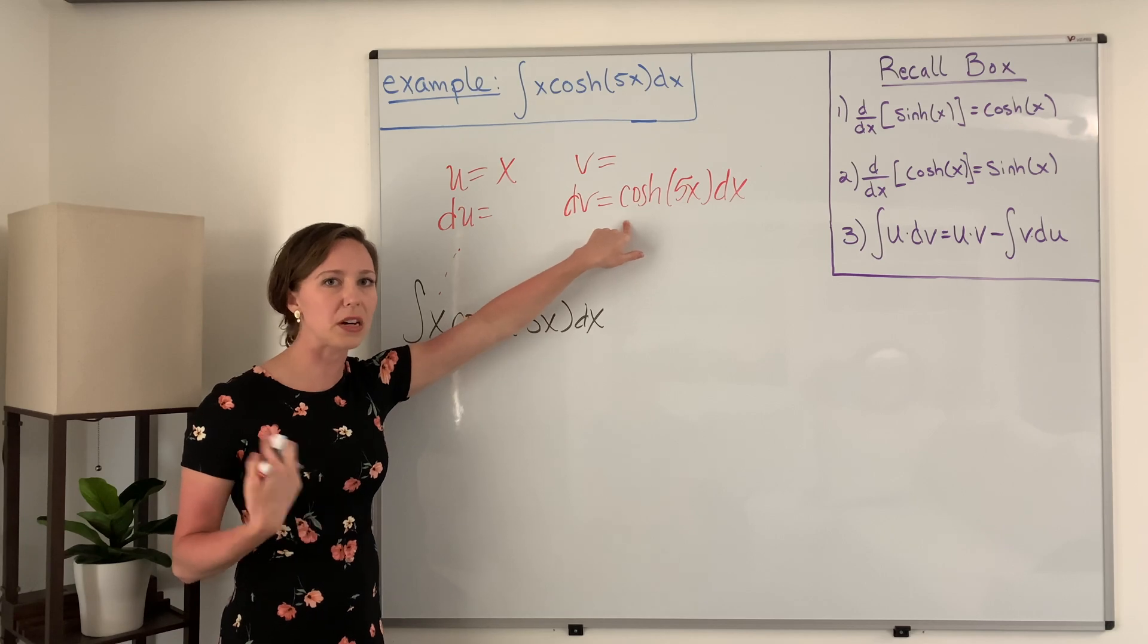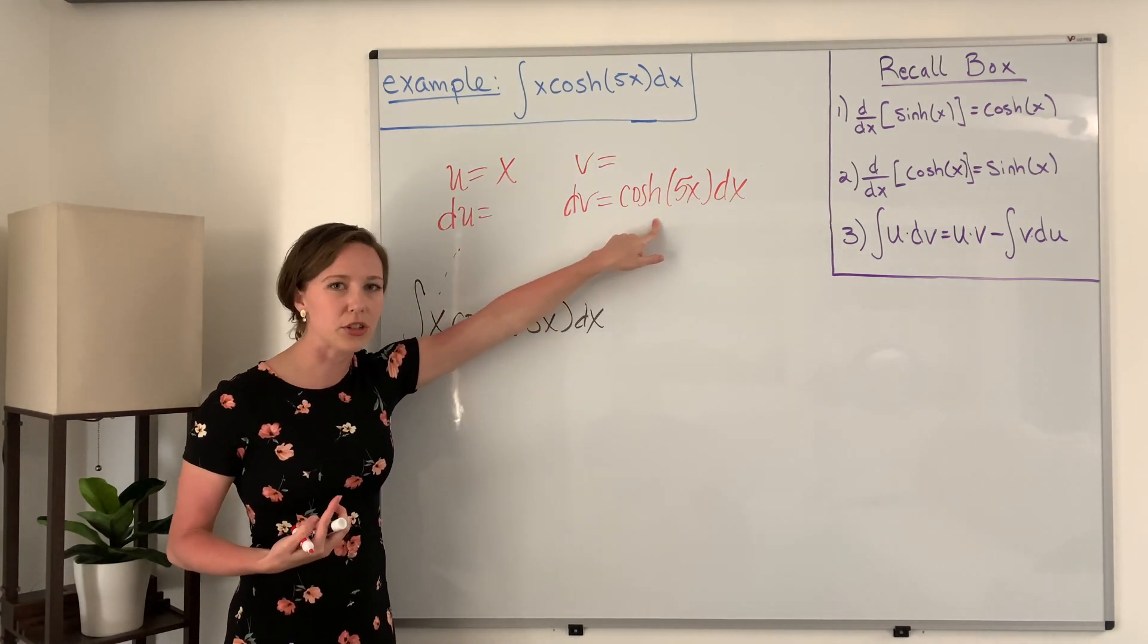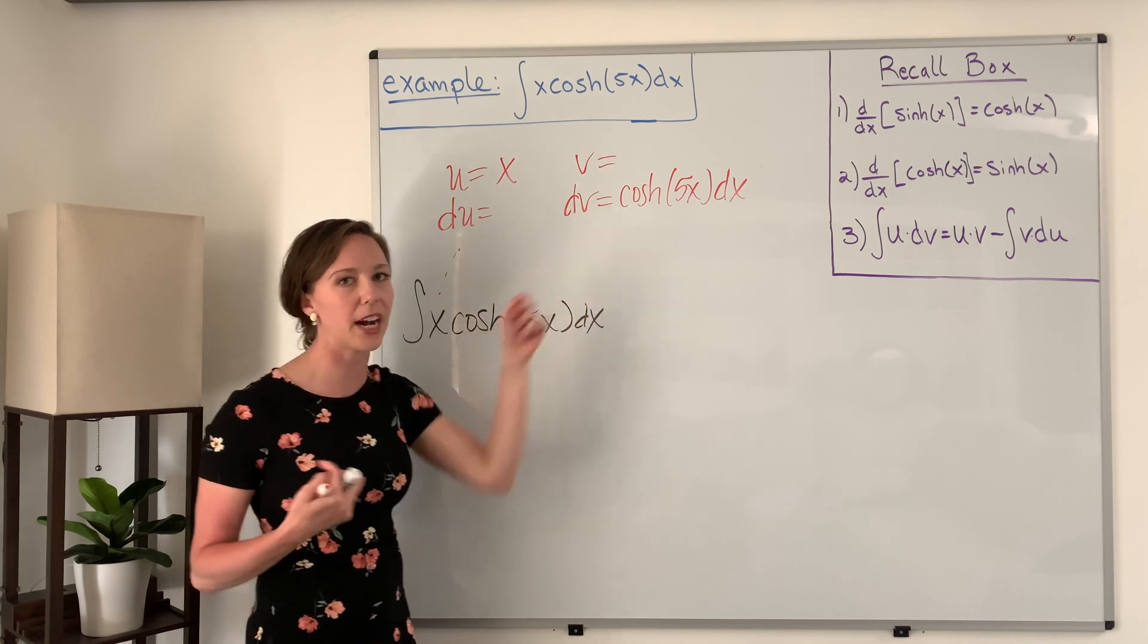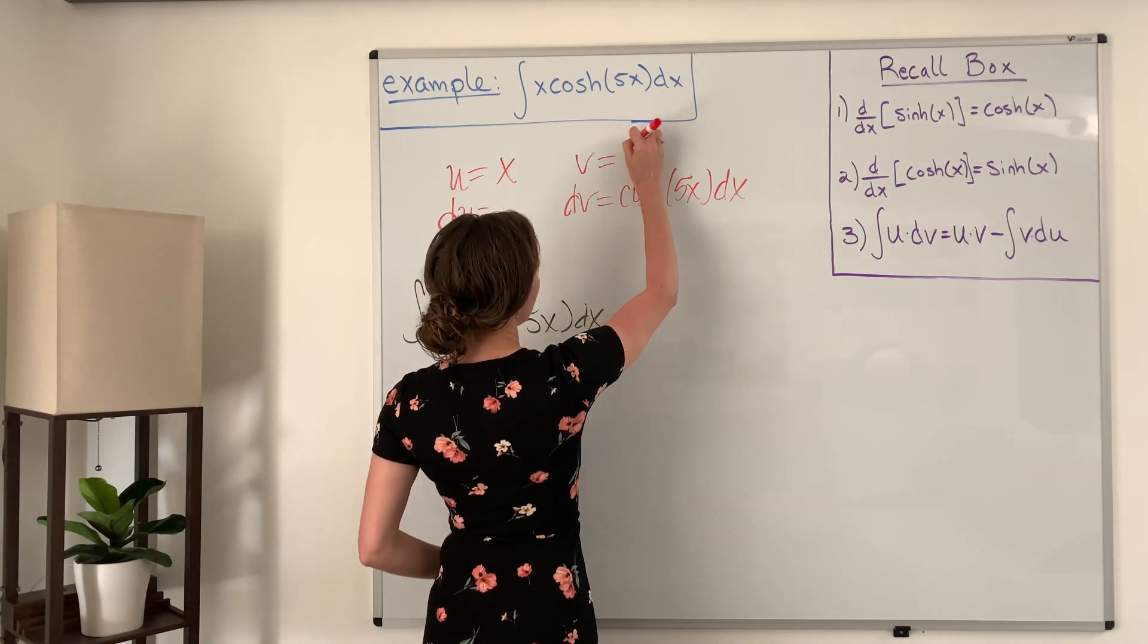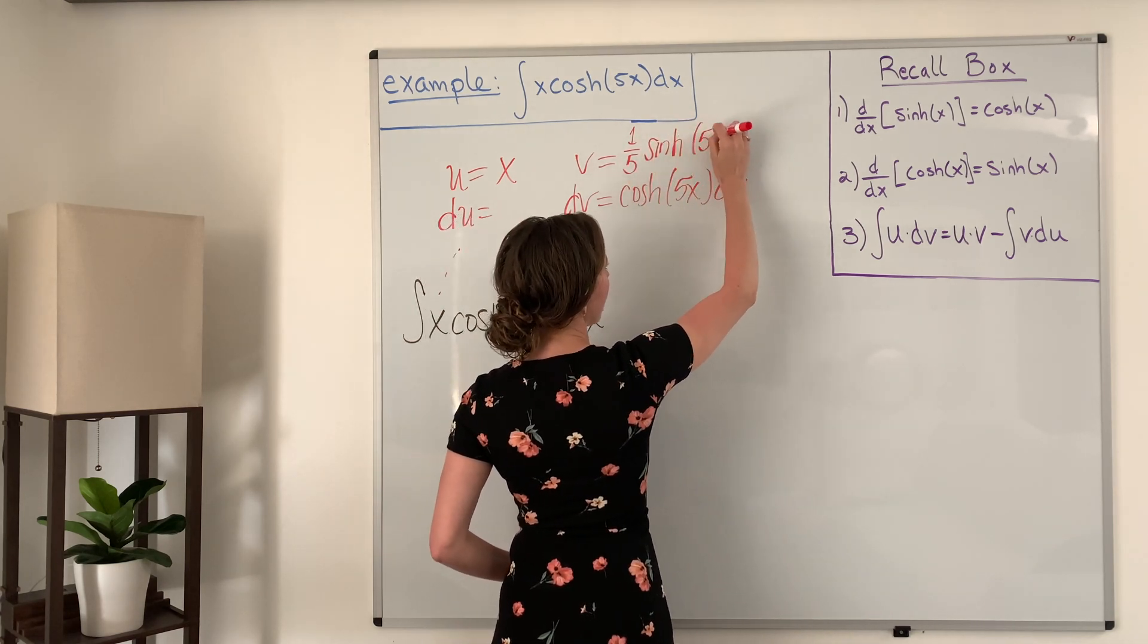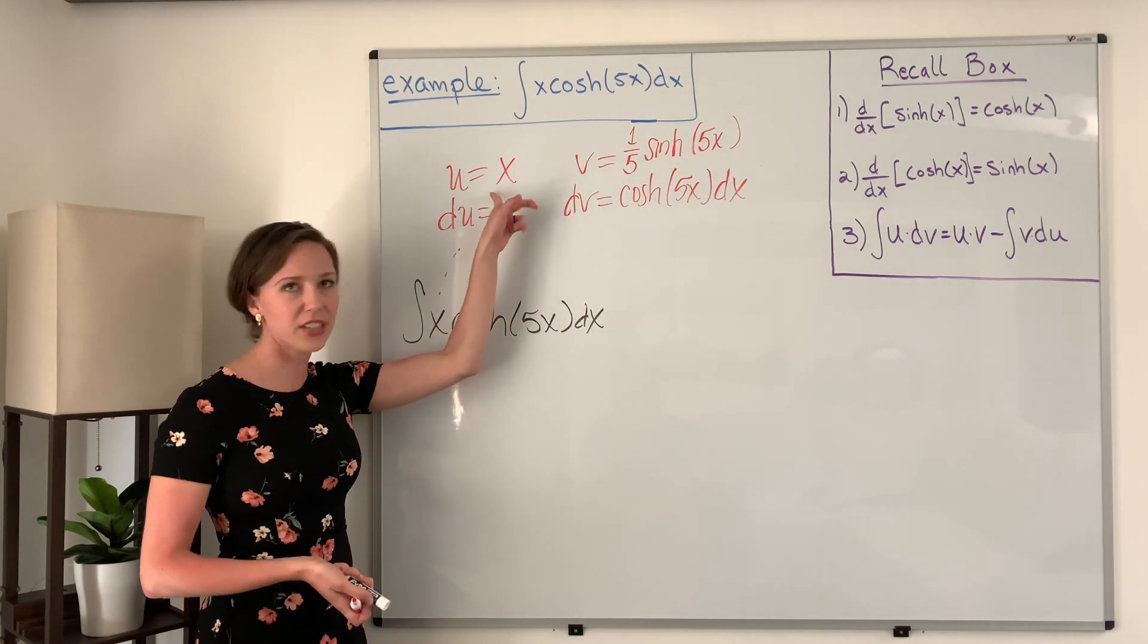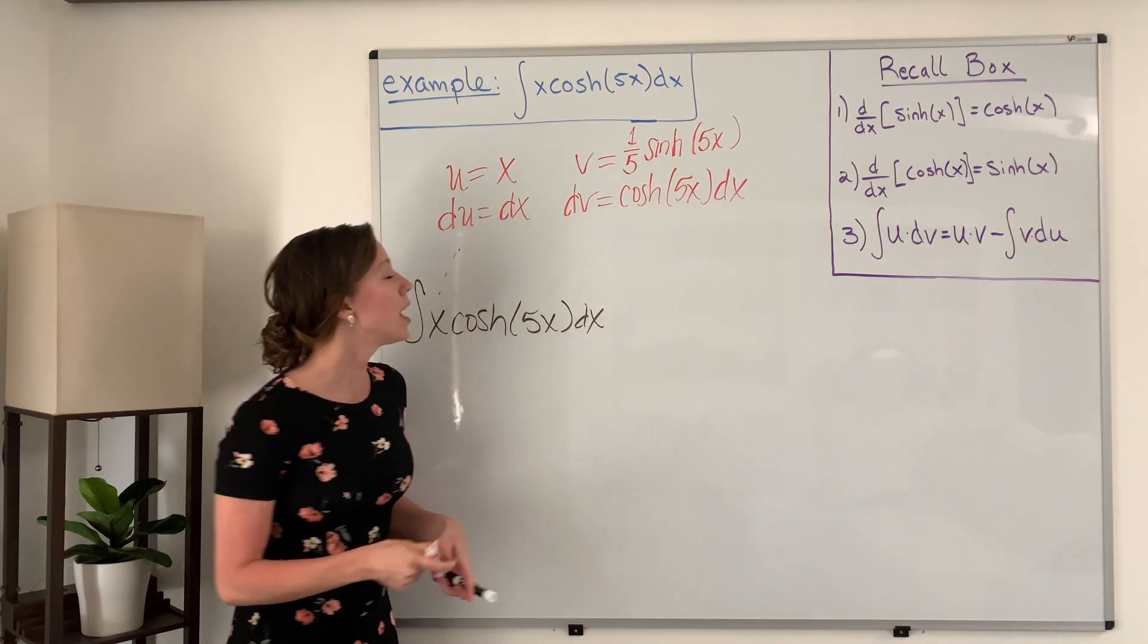This particular one, in order to find what v would be, we actually need to take the integral of dv, and to do that we actually need to use u-substitution. And so if you would like to, you can pause the video and work that out for yourself. But we should get one over five hyperbolic sine of 5x. And then over here to find du, this is much more simple. We just take the derivative of x, and so we get 1 dx.